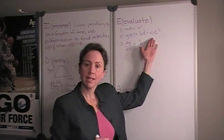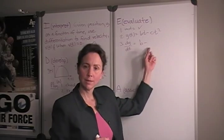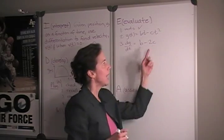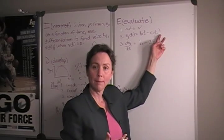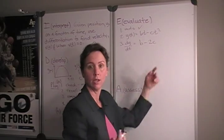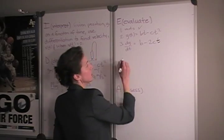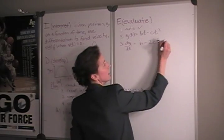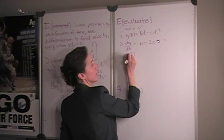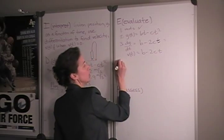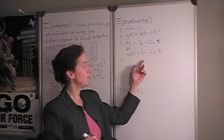And the first derivative of the second term, this power of 2 comes down in front as a coefficient. So, we have minus 2c, and then we subtract 1 from that power. So, 2 minus 1 is 1, which we can represent as just t. So, our expression for velocity as a function of time is b minus 2ct, which we can substitute now for b and c.